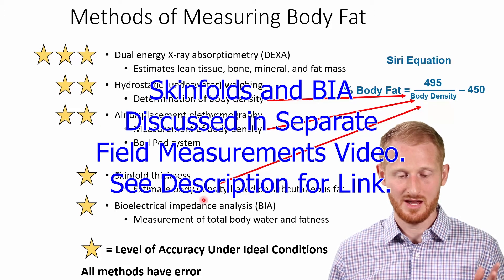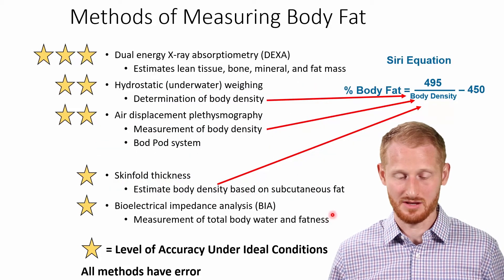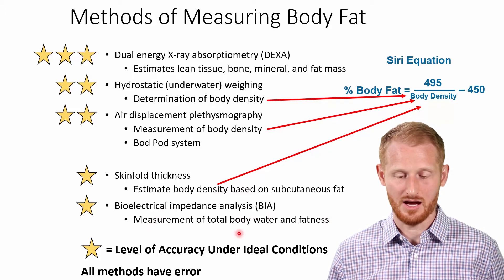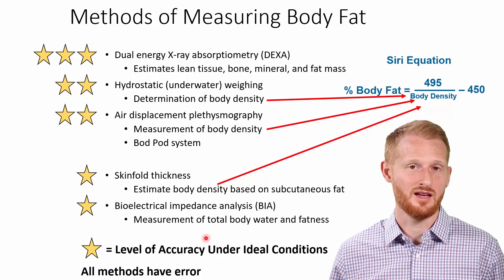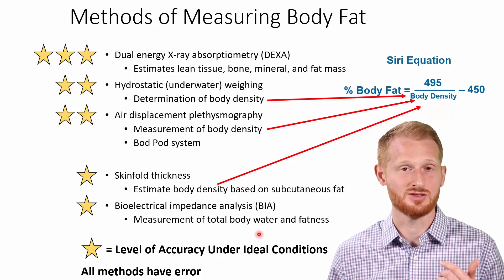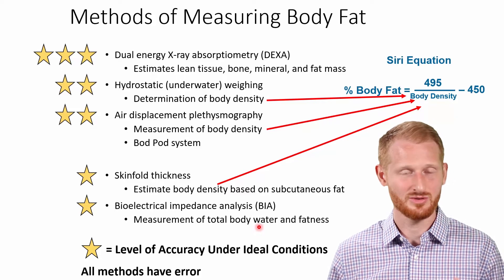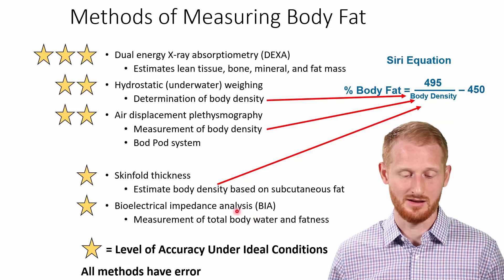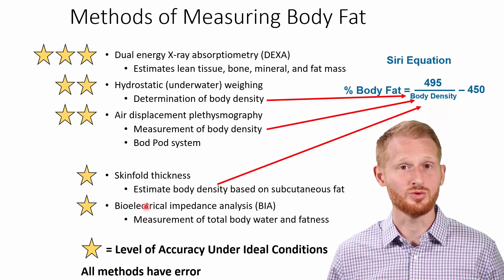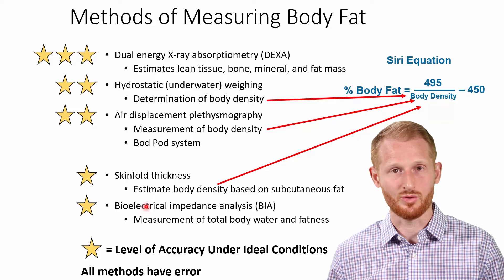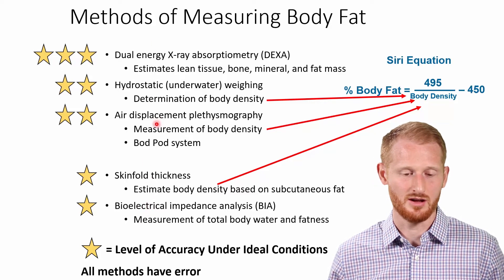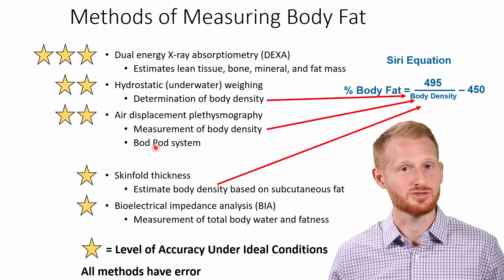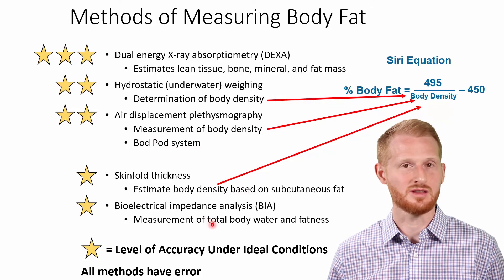Skinfolds measure the subcutaneous fat under the skin by pinching the person. Bioelectrical impedance analysis, or BIA, is another commonly used method that determines how much fat a person has and is also very useful for estimating body water. Skinfolds and BIA are your typical field or gym-based measurements, whereas the other methods are usually only going to be seen in very high-end facilities or research and clinical settings.